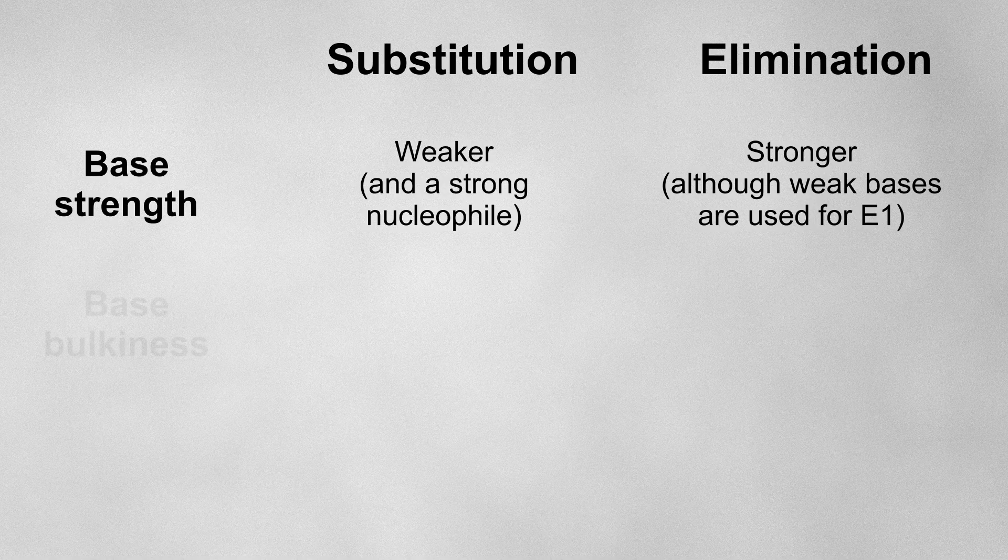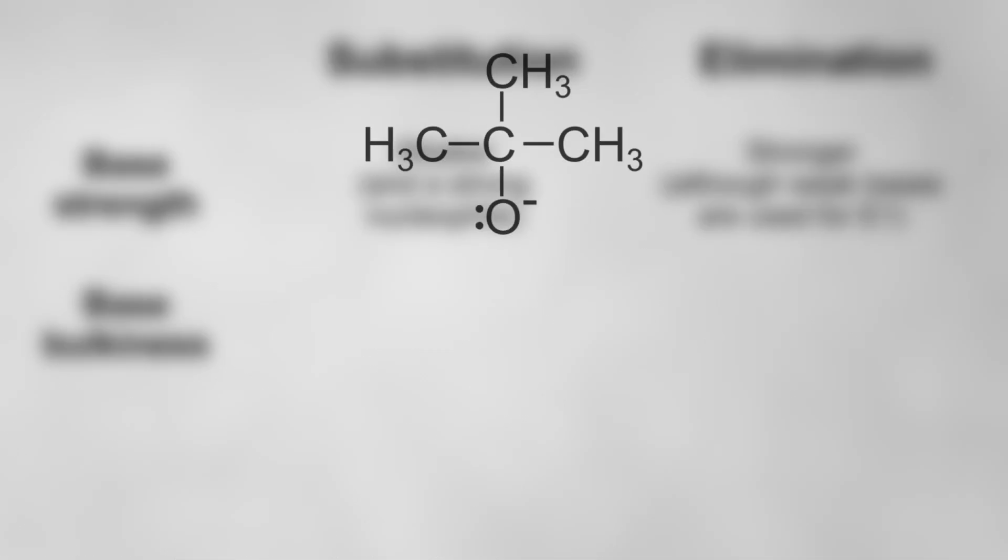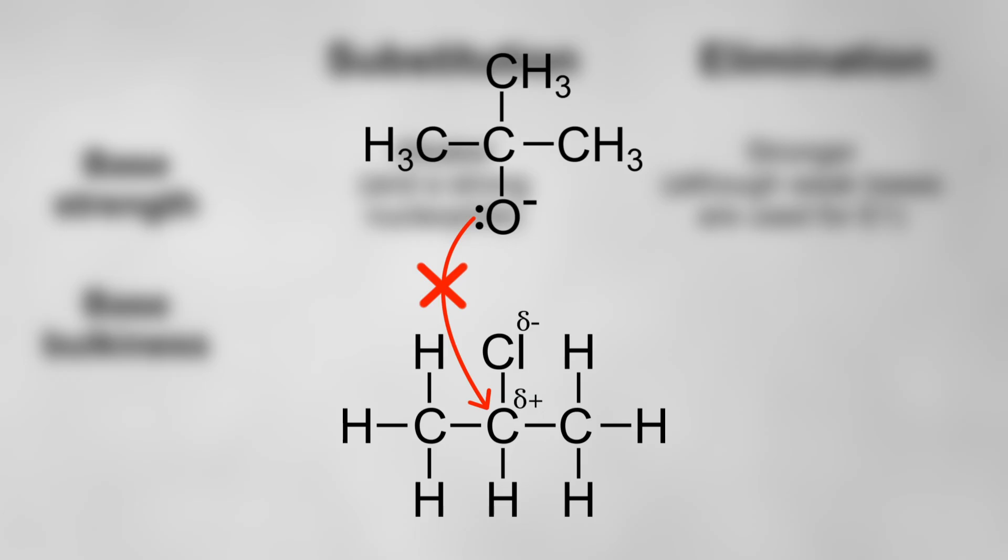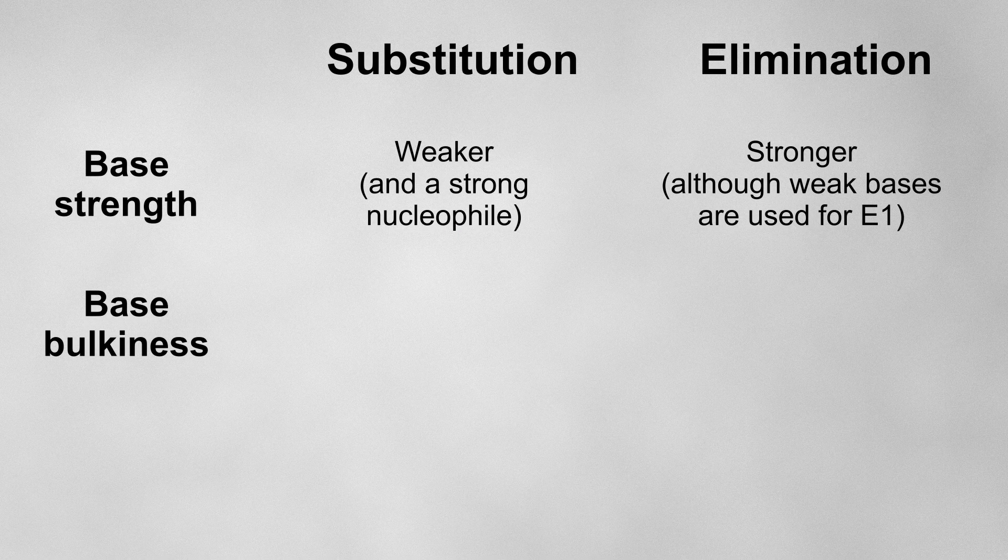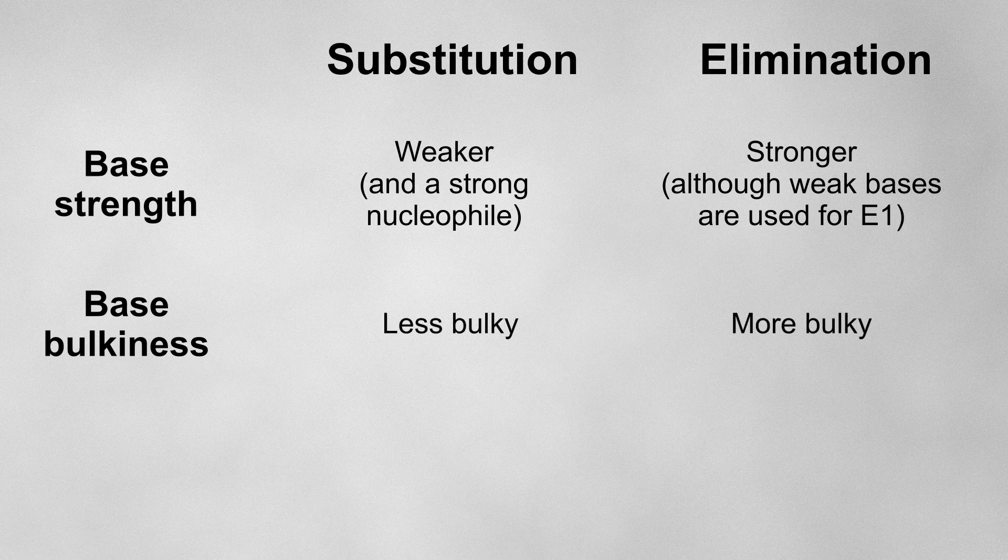The second factor is how bulky the nucleophile is. A bulkier nucleophile will find it harder to access the delta plus carbon in order to initiate a substitution reaction. Instead, it'll be much easier for it to remove an adjacent proton, which is more exposed. So a bulkier nucleophile favors elimination, specifically E2.